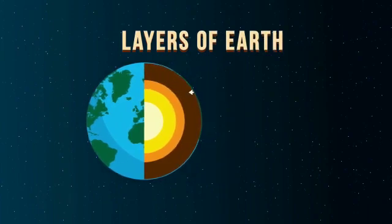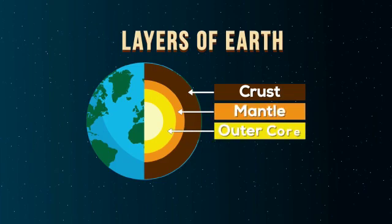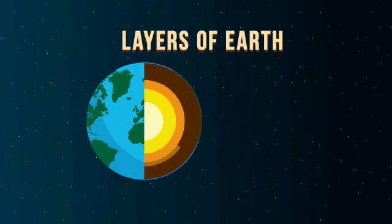Outermost layer is called crust. Next is a hot but nearly solid layer called mantle. This is followed by the liquid outer core and the innermost layer is the solid inner core. The area between the upper layer of the mantle and the crust is called lithosphere.